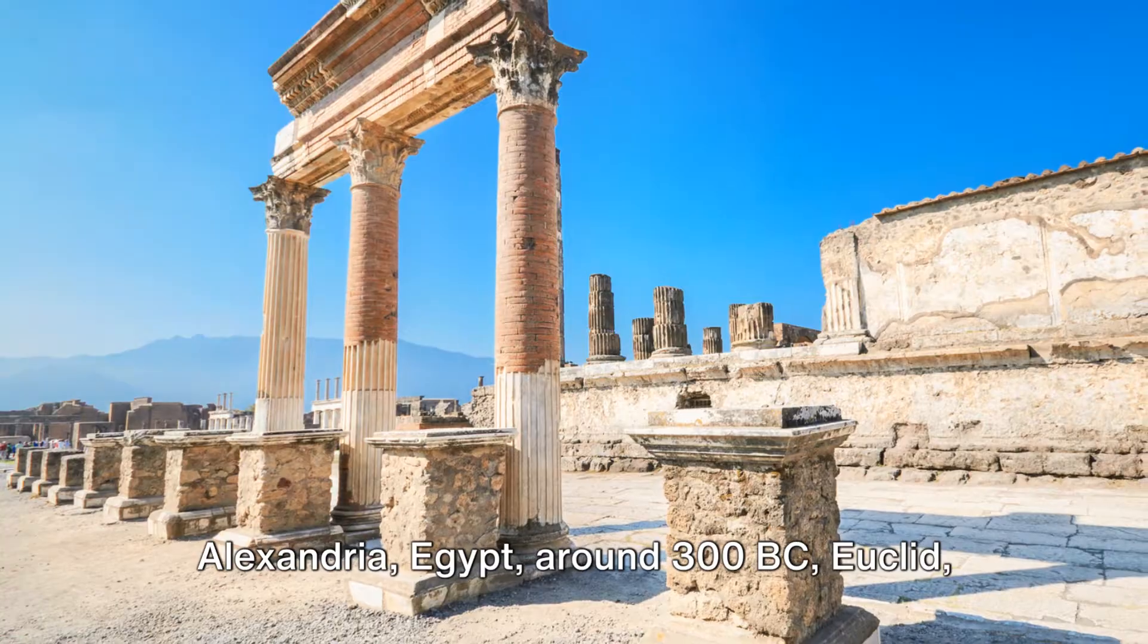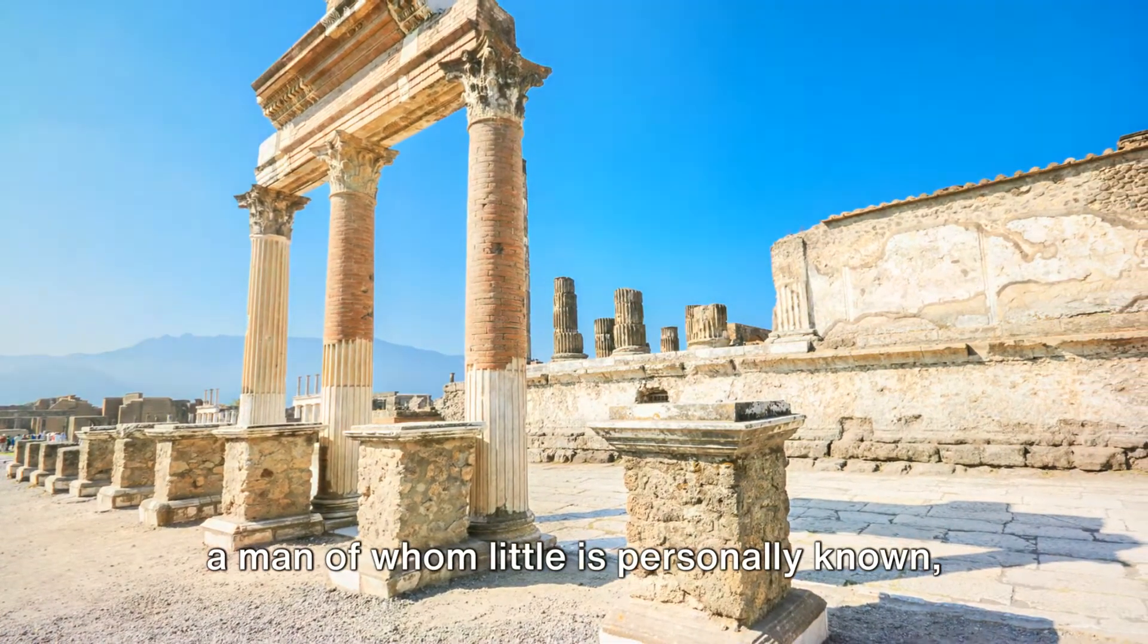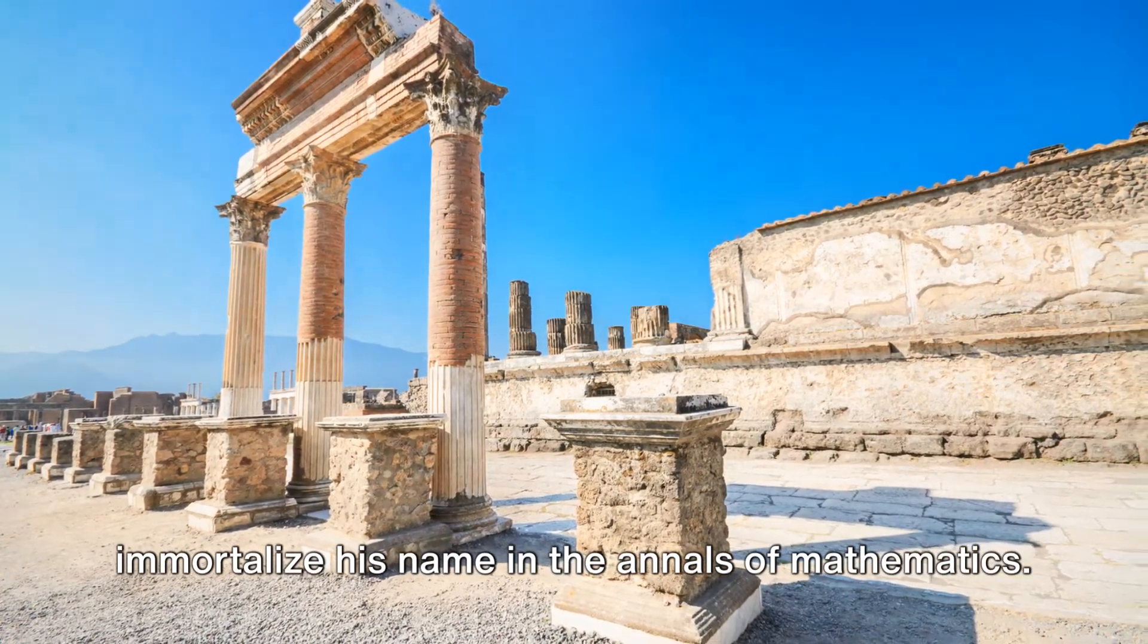In the bustling environment of Alexandria, Egypt around 300 BC, Euclid, a man of whom little is personally known, embarked on an endeavor that would immortalize his name in the annals of mathematics.